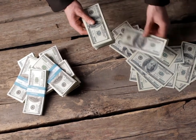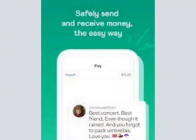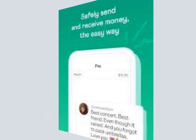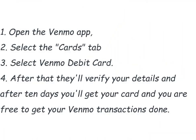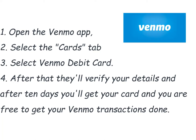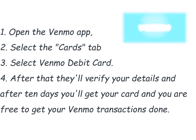Without any waste of time, let's show you how you can withdraw money from your Venmo. To withdraw from Venmo, you'll have to withdraw it using your Venmo card, but you first have to request for a card. To begin: 1. Open the Venmo app. 2. Select the Cards tab. 3. Select Venmo Debit Card. After that, they'll verify your details and after 10 days you'll get your card and you are free to get your Venmo transactions done.